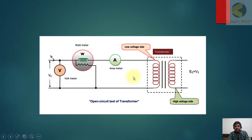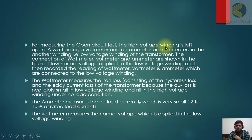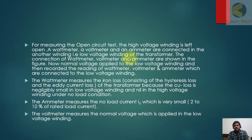To perform the open circuit test, the high voltage winding is left open, and a wattmeter, voltmeter, and ammeter are connected to the low voltage winding. Normal voltage is applied to the low voltage winding, and the readings of the wattmeter, voltmeter, and ammeter are recorded. The wattmeter measures the iron loss, consisting of hysteresis loss and eddy current loss, because the copper loss in the low voltage winding is negligibly small and nil in the open high voltage winding. The ammeter measures the no-load current I0, which is small — typically around ten percent of rated current.